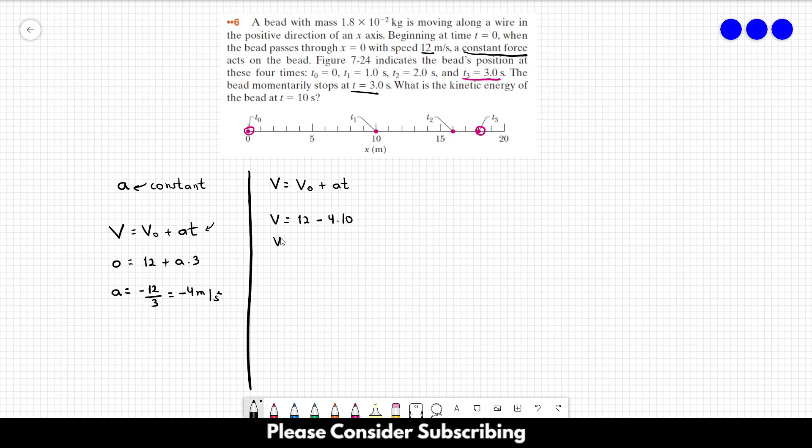So, we have that v equals 12 minus 40, which gives us minus 28 meters per second. So, this is the speed when the clock shows us 10 seconds.